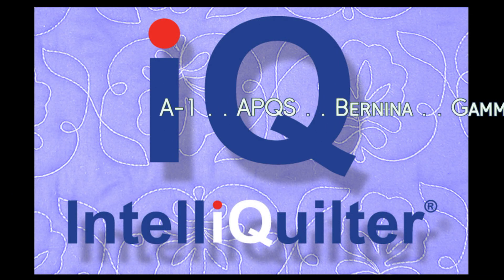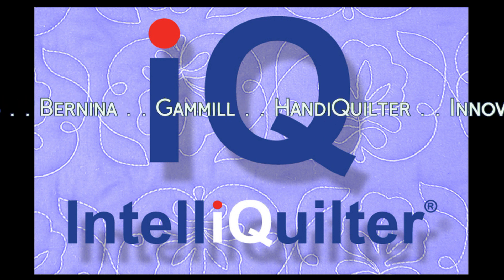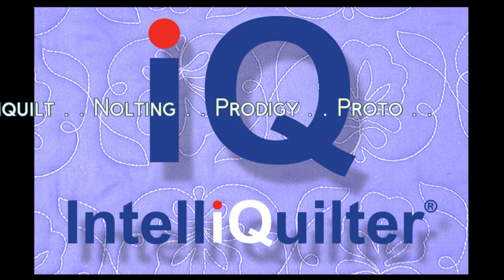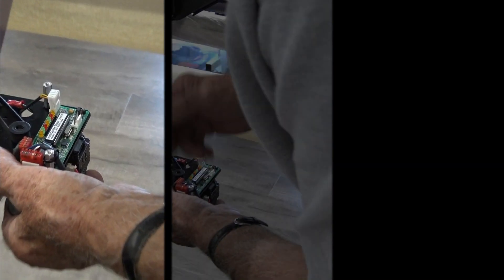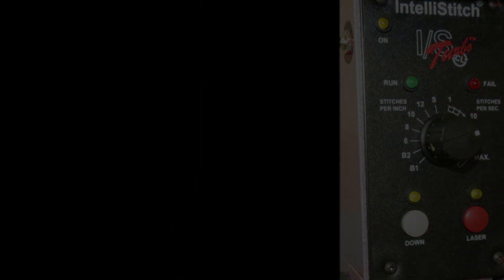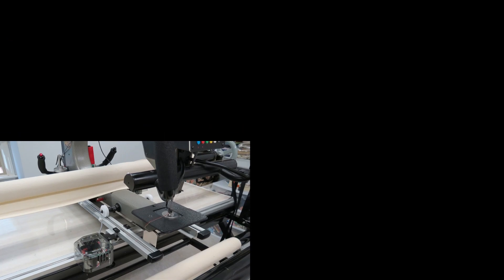IntelliQuilter is available for most major brands and models and is designed simply to install with minimal modifications. Our patented motor control system easily attaches to the carriage and machine head. System requirements include a single stitch button or needle positioner. Stitch regulation is not required.